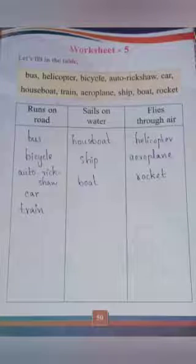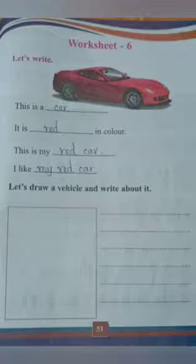Which vehicles sail on water? Houseboat, ship, and boat. Which vehicles fly through air? Helicopter, aeroplane, and rocket. To summarize: runs on road — bus, bicycle, auto rickshaw, car, train; sails on water — houseboat, ship, boat; flies through air — helicopter, aeroplane, rocket.